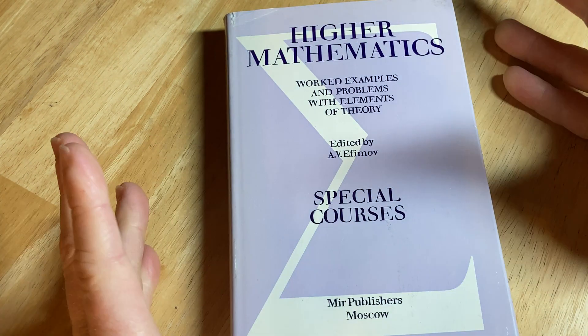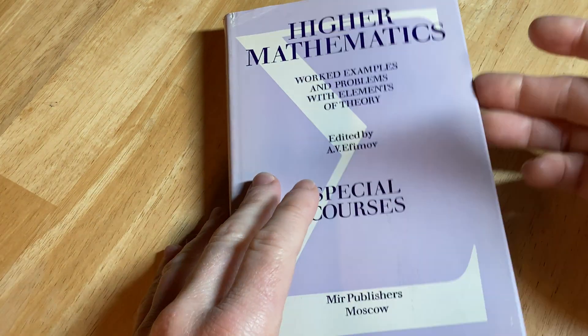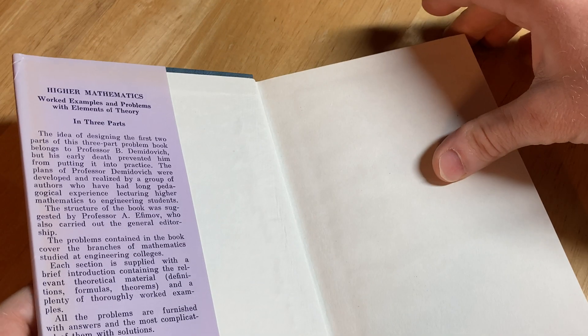So Mir Publishers was, I don't know if it still is, a publishing company in Russia that would translate books from Russian to other languages, and they would be used all over the world.